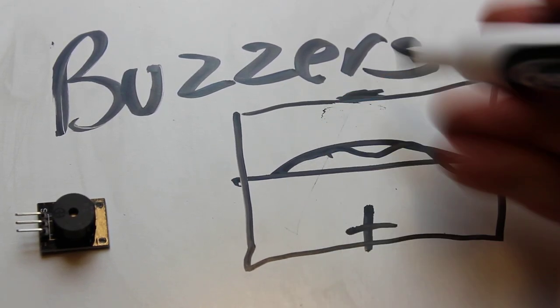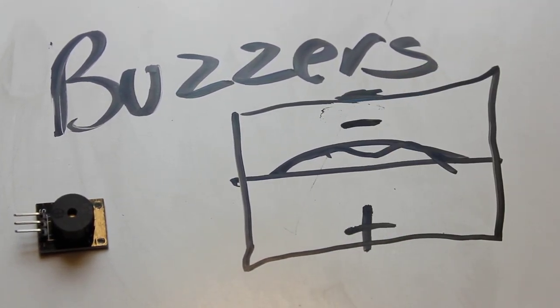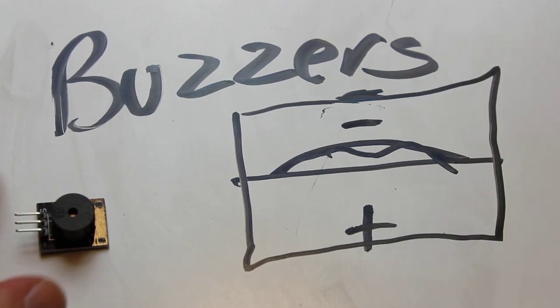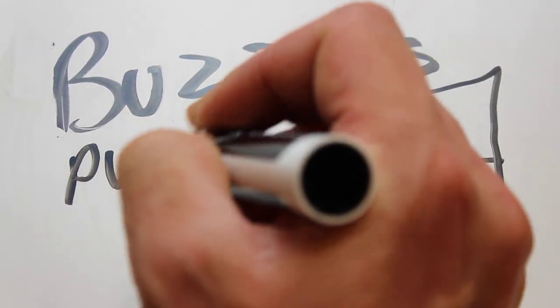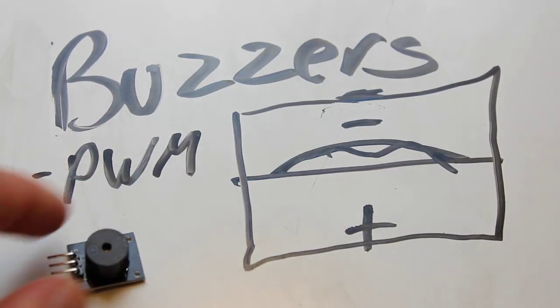You've got positive and negative. When you send in a PWM signal, which is what these take, PWM from your Arduino,